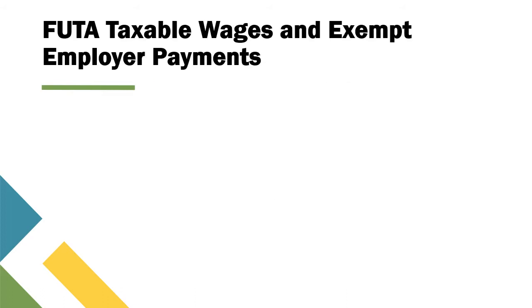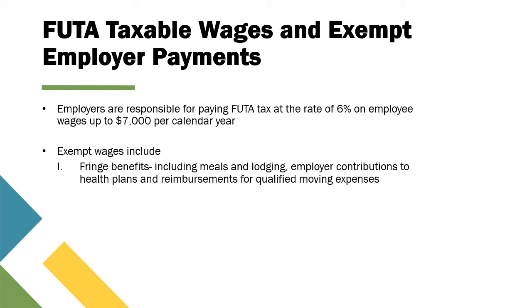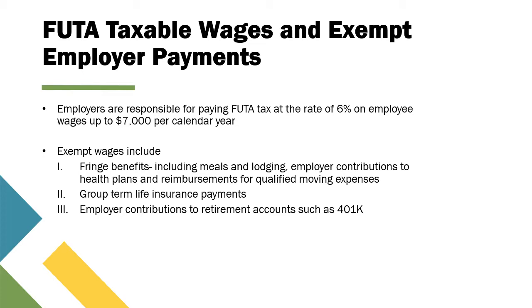Employers are responsible for paying FUTA tax at the rate of 6% on employee wages, up to $7,000 per calendar year. Exempt wages include fringe benefits such as meals and lodging, employer contributions to health plans, reimbursement for qualified moving expenses, group term life insurance payments, employer contributions to retirement accounts such as 401(k)s, and dependent care payments to employees.